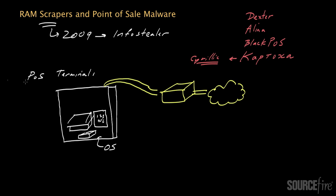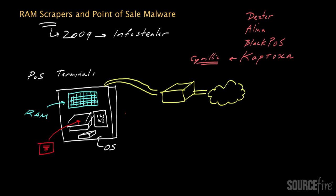The point-of-sale terminal also has random access memory, or RAM, which is used as scratch space for carrying out various computations. Because it's a computing device, it's possible for a malicious party to install malware onto a POS terminal — either by someone with physical access to the device, or by an attacker who accessed the system through its network interface and leveraged a technical vulnerability to set up a backdoor used to drop malware onto the system.